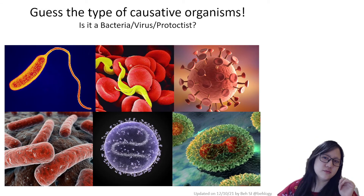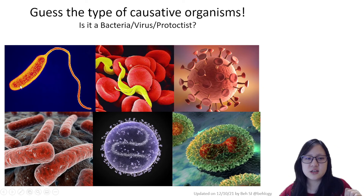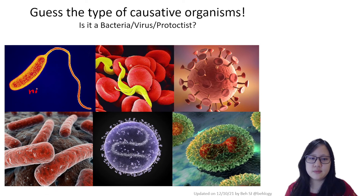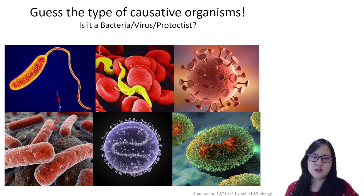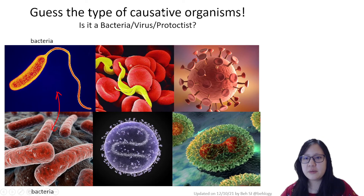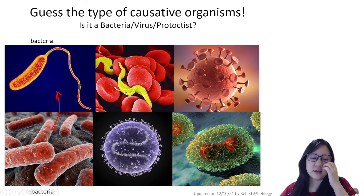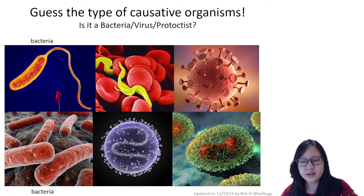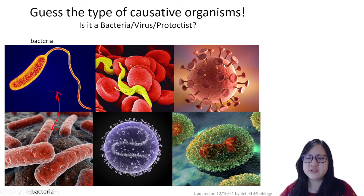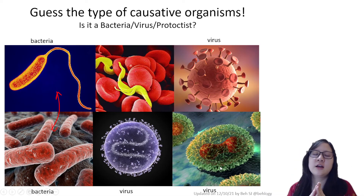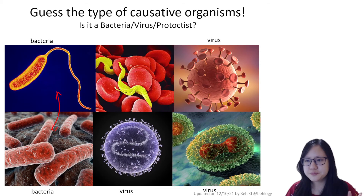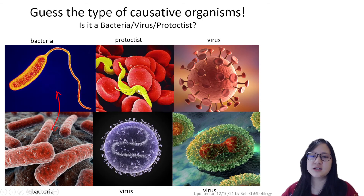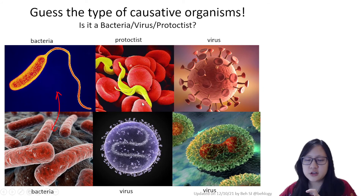Looking at the images, can you guess which is bacteria, virus, or protoctist? The rod-shaped or comma-shaped organism with a flagella is typical bacteria. The ball-with-spikes structure is a virus — DNA and RNA in the middle surrounded by the capsid then the lipid envelope. What remains, looking like a little worm, is actually a unicellular eukaryote called a protoctist. And this protoctist actually causes malaria, which we're going to talk about next.